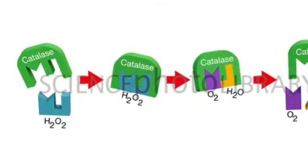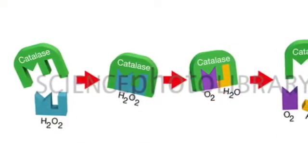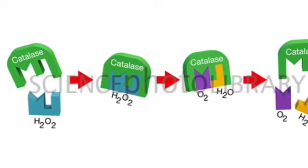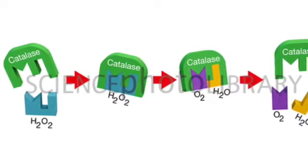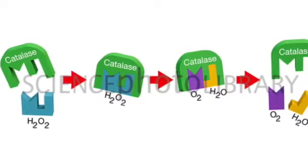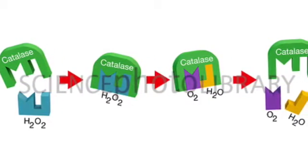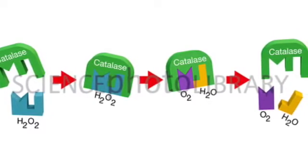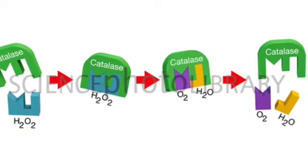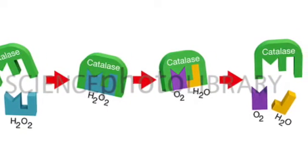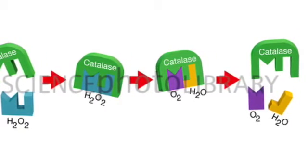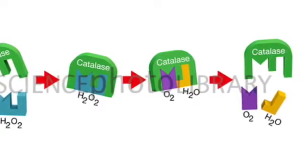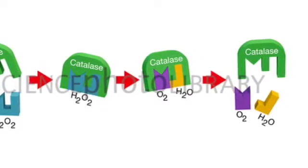This is a picture depicting the reaction. As you can see, the substrate hydrogen peroxide binds to the active site of catalase. Then catalase hydrolyzes the hydrogen peroxide and creates water and oxygen from it. The new products then leave the active site.